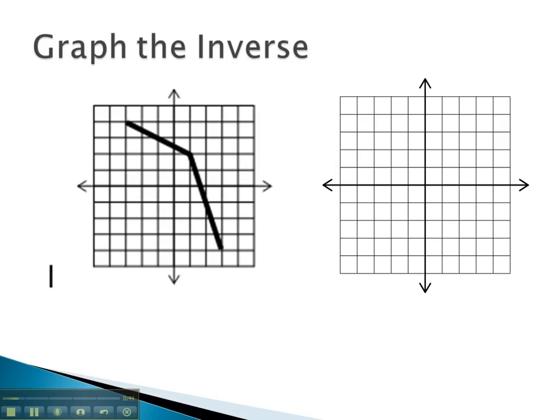In this problem, we see a graph with two endpoints, and also a key point where the graph seems to bend. Let's take a look at the coordinates of those points. The point on the far left is found by going left 3, up 4. This makes that first point (-3, 4).